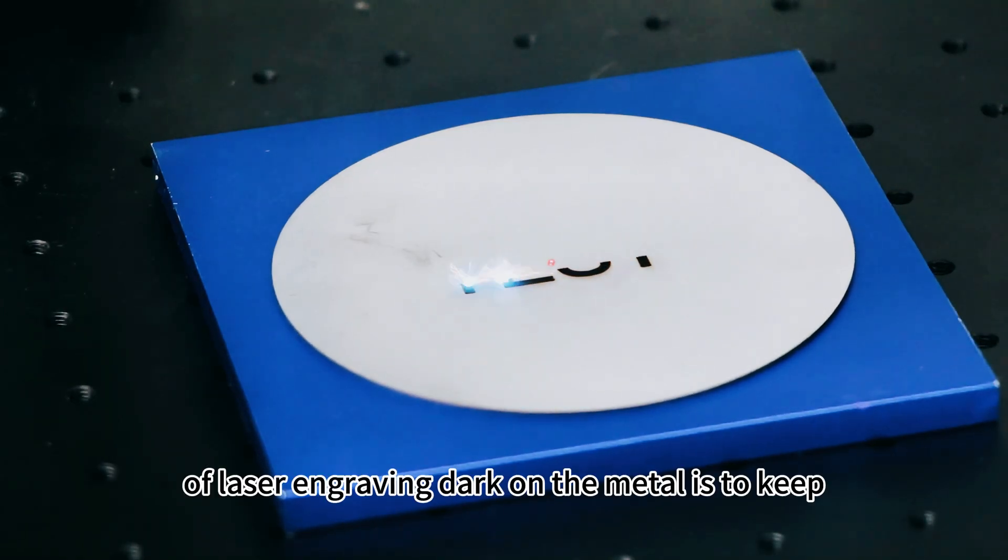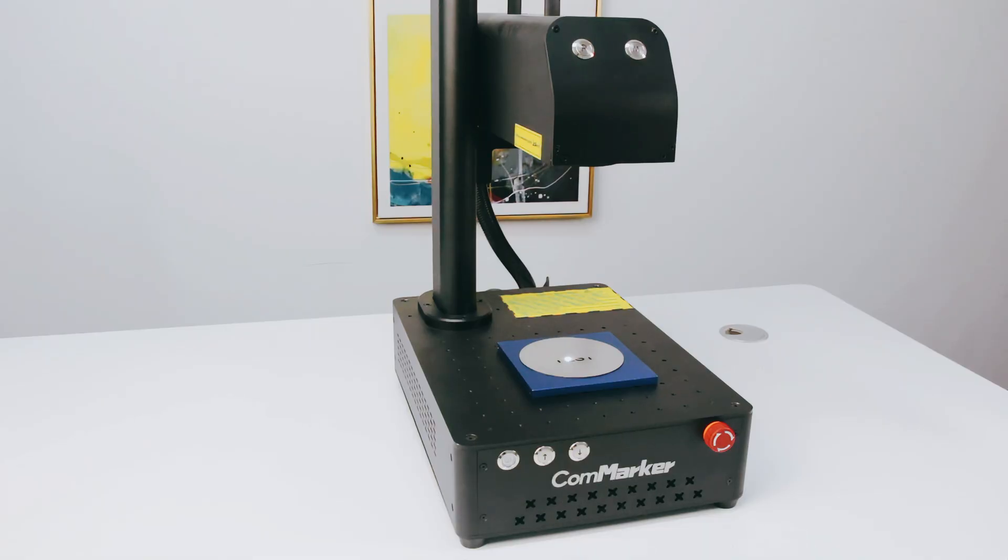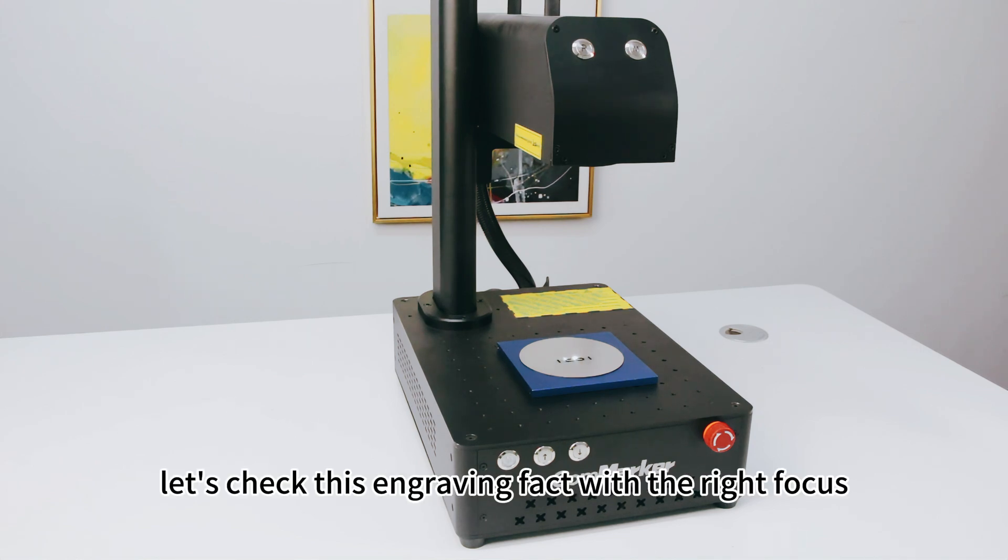The main point of laser engraving dark on metal is to keep the proper focus instead of the right one. With the right parameter, let's check its engraving effect with the right focus.